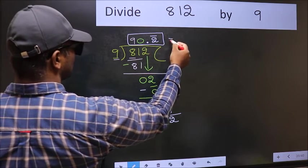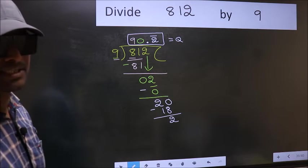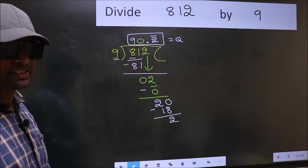So this is our quotient. Did you understand where does the mistake happen? You should not do that mistake.